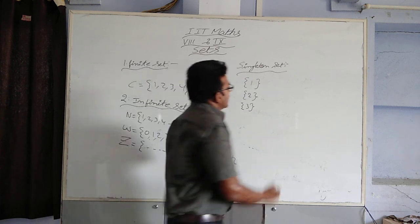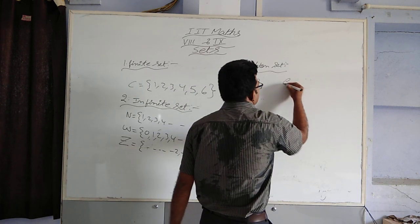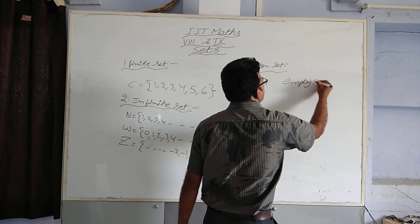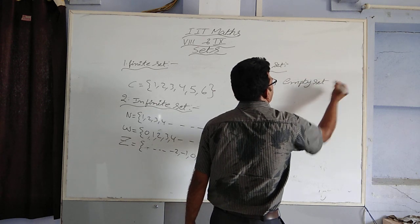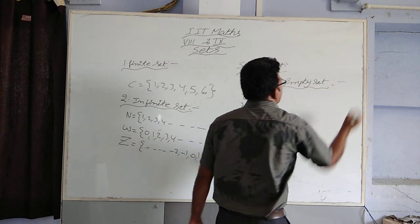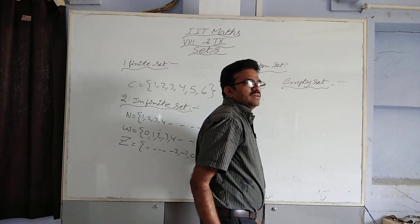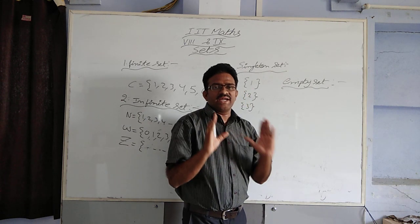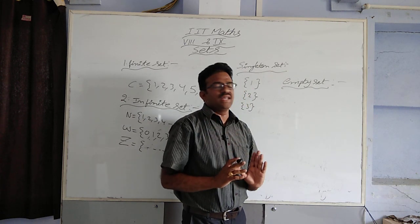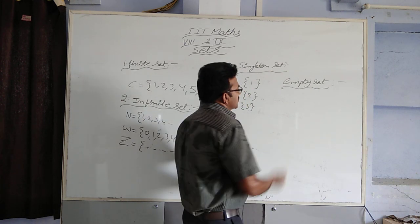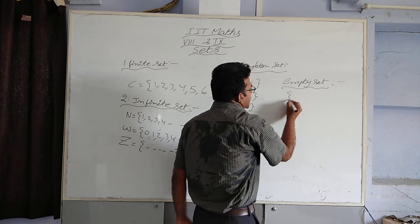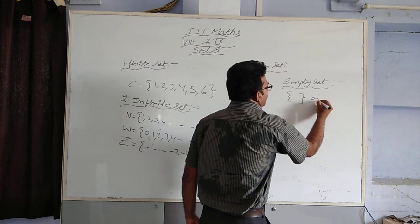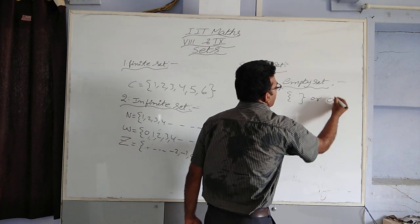Next, empty set. There are no elements. The set doesn't contain any element. We simply represent it with empty curly braces or the symbol phi (∅).